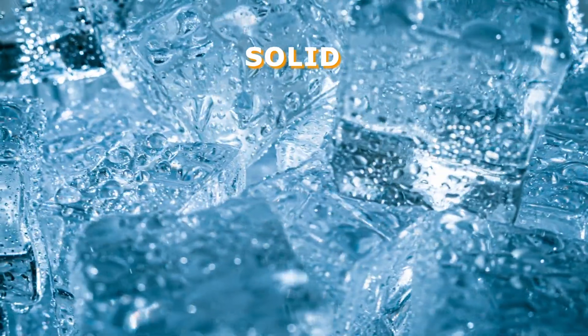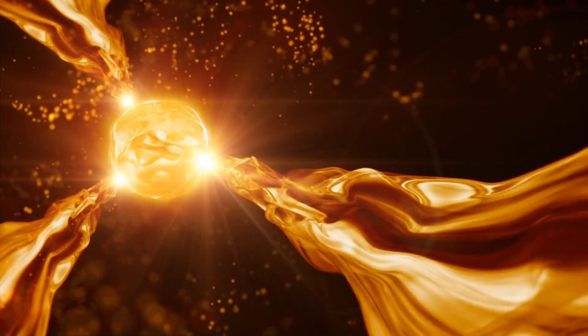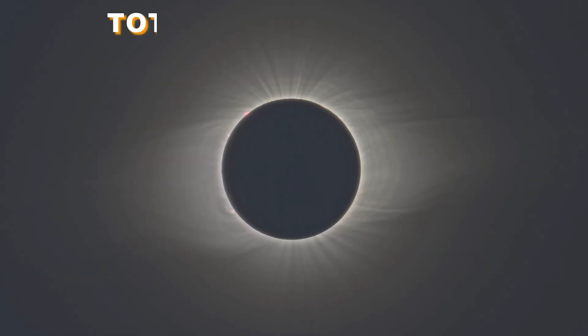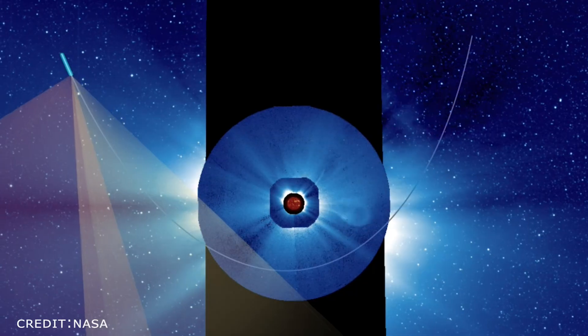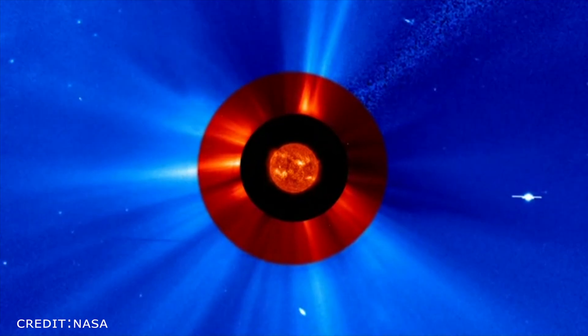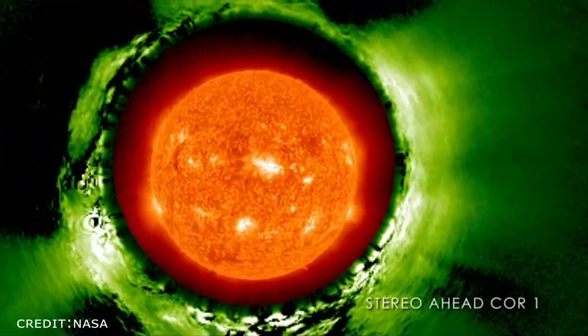Just as a solid turns into a liquid when heated and a gas when heated further, a gas turns into plasma when heated to an extremely high temperature. The corona is usually hidden by the brightness of the sun, but can be observed during a total solar eclipse or with an instrument called a coronagraph. A coronagraph blocks the strong rays from the sun, allowing the corona to be viewed clearly.